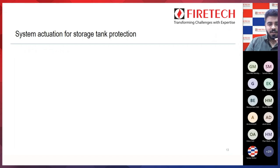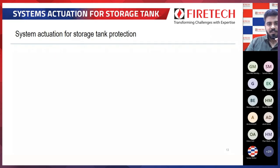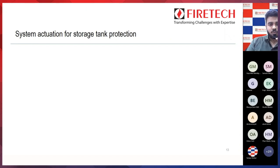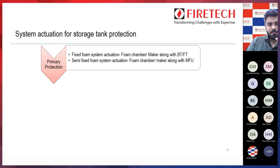As we understood from the video, primary, secondary, and tertiary devices get actuated one by one. So what type of primary, secondary, and tertiary devices are used for storage tank protection — we will understand that here. For primary protection, we have a fixed foam system or semi-fixed foam system. We will understand these two systems better in the further slides.